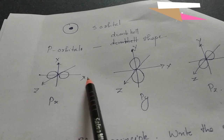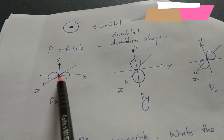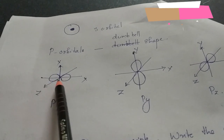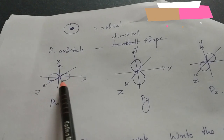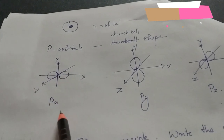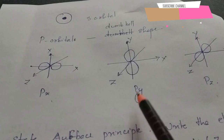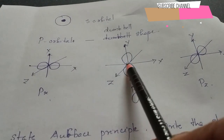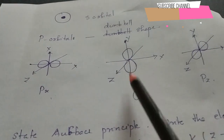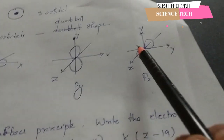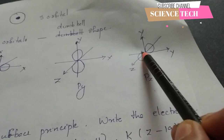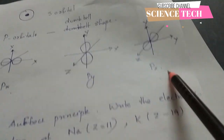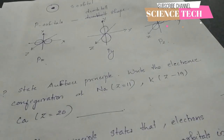In the X axis we have dumbbell lobes called PX; in the Y axis lobe we call it PY; and in the Z axis lobe we call it PZ.